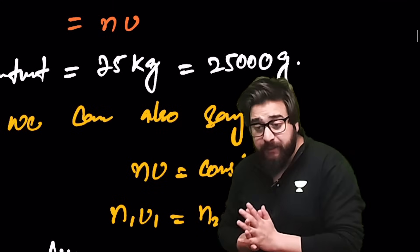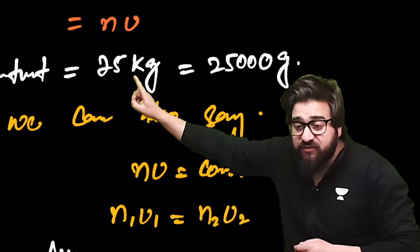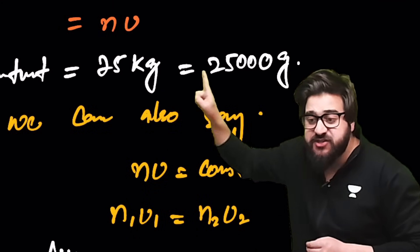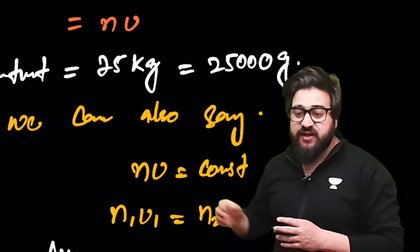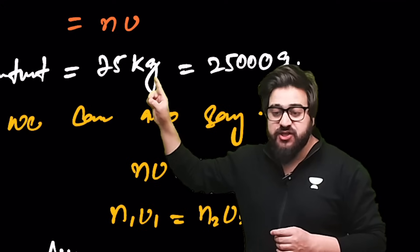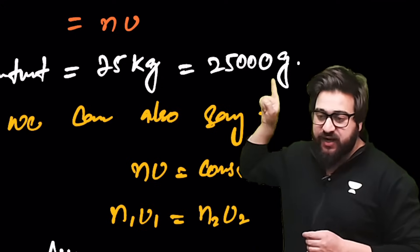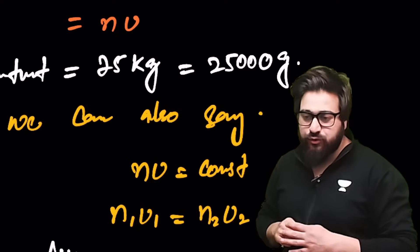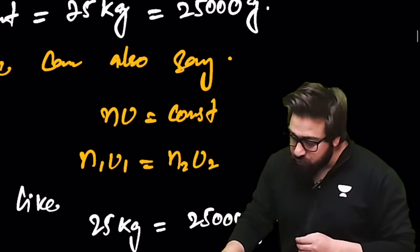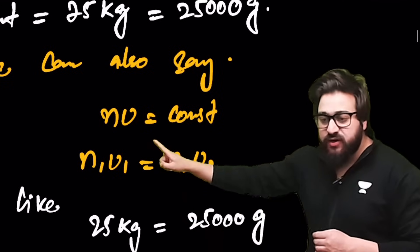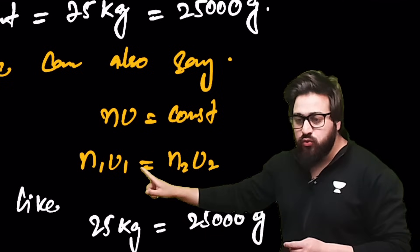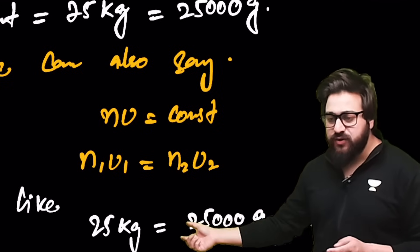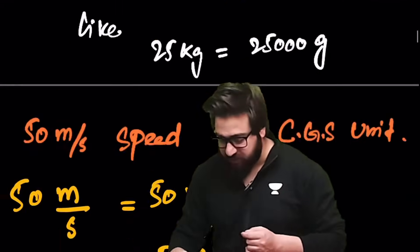For example, 25 kg equals 25,000 grams. Here kg is one unit and grams is another. Since N×U is constant, we can say N₁U₁ = N₂U₂, as confirmed by this example.